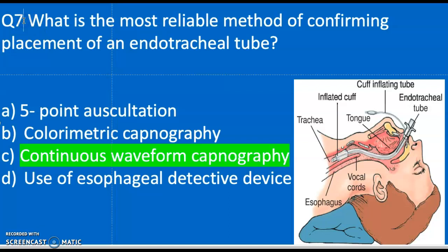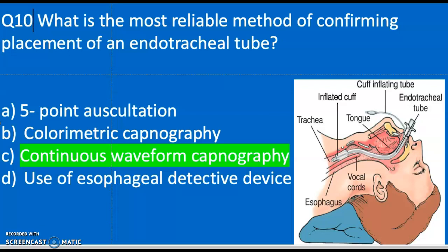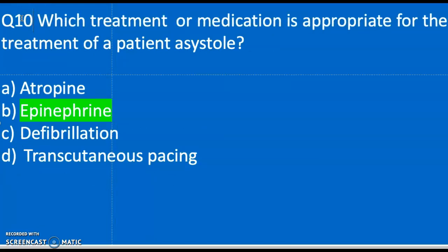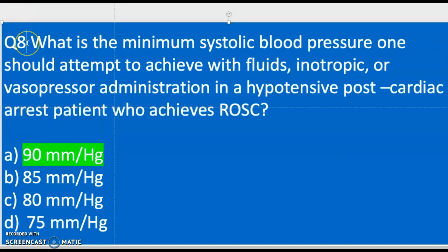Question ten: Which treatment or medication is appropriate for a patient in asystole? A) Atropine, B) Epinephrine, C) Defibrillation, D) Transcutaneous pacing. The correct answer is B — epinephrine for a patient in asystole.